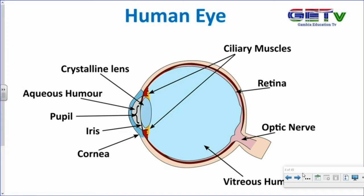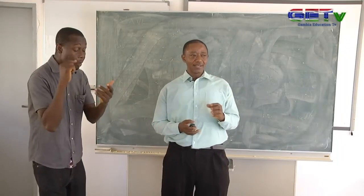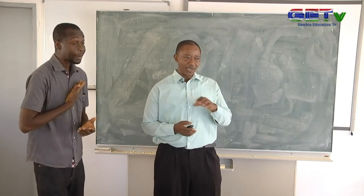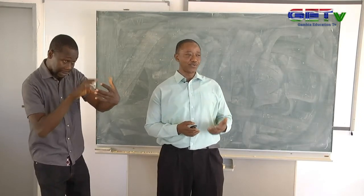The arrow is not pointing to the ciliary muscles exactly — it is pointing to the suspensory ligaments that hold the lens. You can see the lens labeled there as the crystalline lens. The choroid also forms what we call the iris. When you look into somebody's eye, the dark or brown or whatever color you see in the middle, that is the iris. The iris has a hole in the center that we refer to as the pupil.